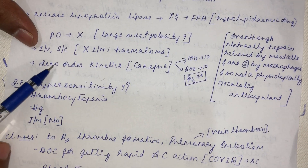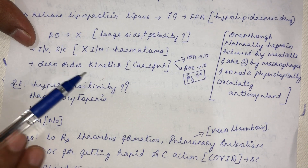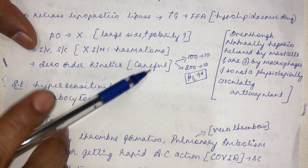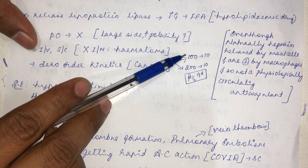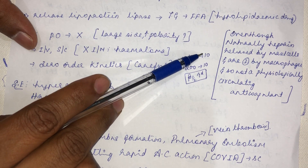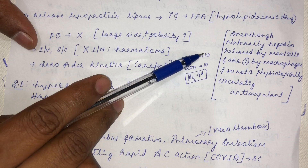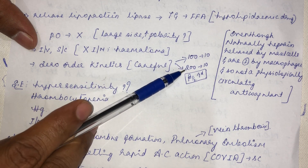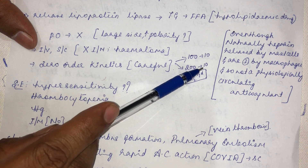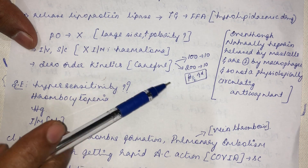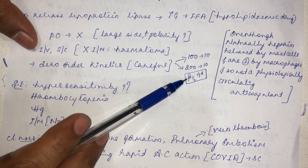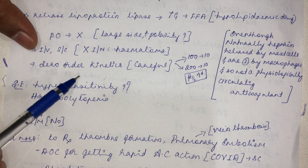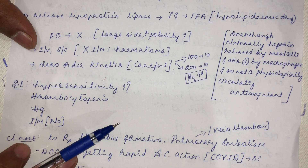Since heparin follows zero-order kinetics, care must be taken with dosing. A constant quantity of drug is metabolized regardless of dose — for example, if 100 units are given, only 10 units will be metabolized. If 200 units are given, still only 10 units are metabolized, so the half-life increases as the dosage increases.